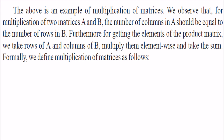We observe that for two matrices A and B, the number of columns in A must equal the number of rows in B — this is very important. When finding the product matrix, we take a row of A and multiply it with a column of B, multiplying element-wise and then summing the products. This defines the multiplication of matrices.